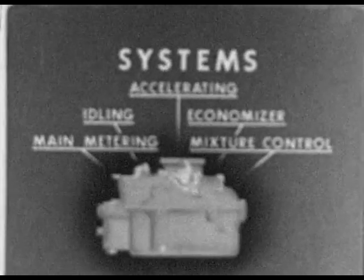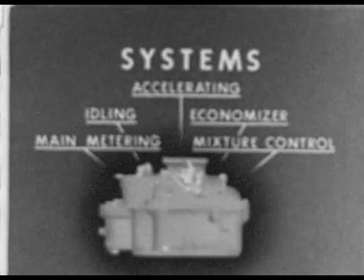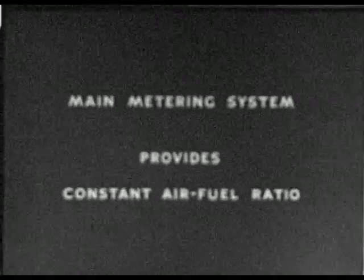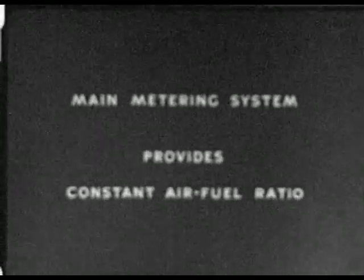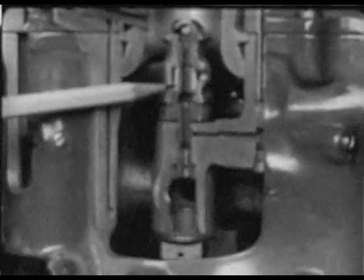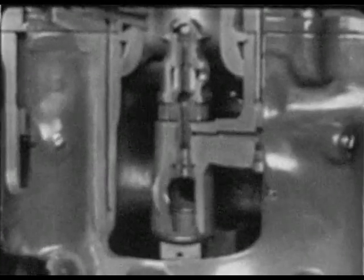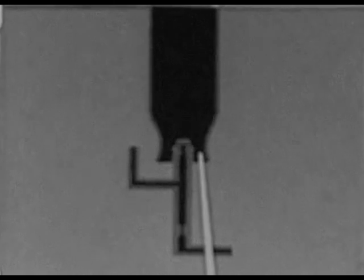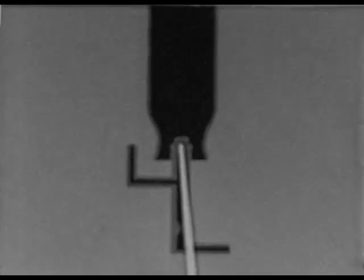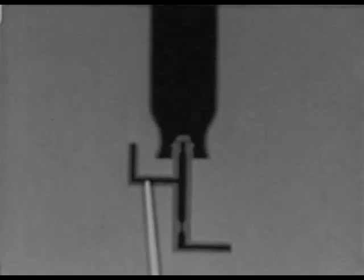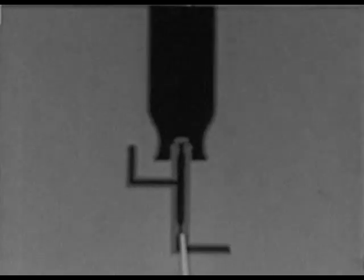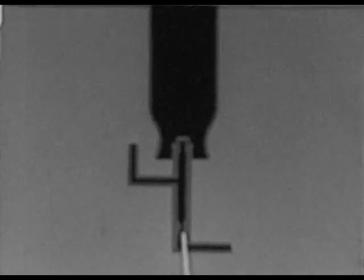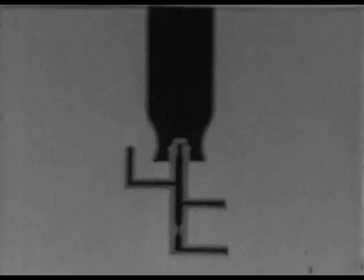The mixture control system compensates for altitude. The main metering system maintains a constant air-fuel mixture at all throttle openings throughout the power range — that is, at speeds other than idling speed. The principal parts of the system are a venturi tube, a main discharge nozzle, the main air bleed, a metering jet which measures or regulates the amount of fuel drawn from the float chamber, and a passage leading to the idling system.